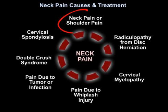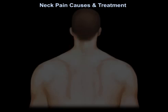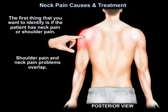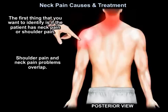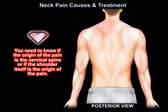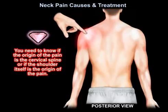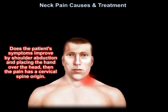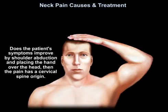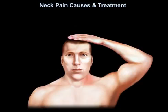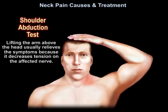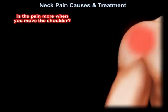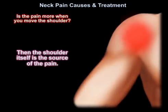The first thing you want to identify is if the patient has neck pain or shoulder pain, as these problems overlap. You need to know if the origin of the pain is the cervical spine or the shoulder itself. Does the patient's symptoms improve by shoulder abduction and placing the hand over the head? Then the pain is cervical spine origin. This is the shoulder abduction test — lifting the arm above the head usually relieves symptoms because it decreases tension on the affected nerve. If the pain is more when you move the shoulder, then the shoulder itself is the source of the pain.